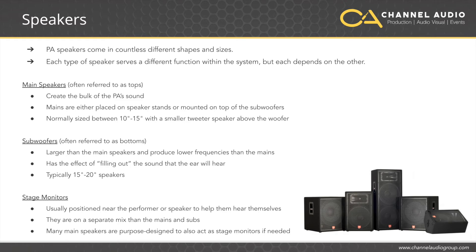The subwoofers are larger than the main speakers and produce lower frequencies than the mains. This has the effect of filling out the sound that the ear will hear. Subwoofers are typically speakers that are about 15 to 20 inches, and although dual 12-inch subs have become more common, to separate the sound of the subwoofers and mains, a crossover unit will almost always be employed. The crossover is usually rack mounted and separates the signal going through it by frequency, sending lower frequencies to the subwoofers and higher ones to the mains. An important part of tuning a PA system is selecting the correct crossover frequency for the room in which the PA is situated.